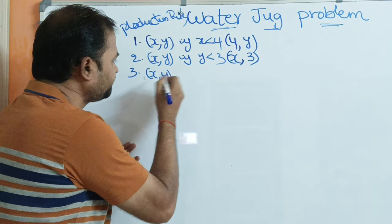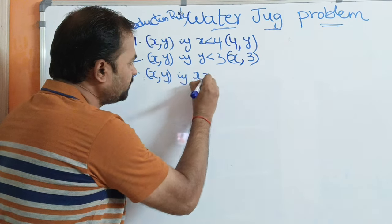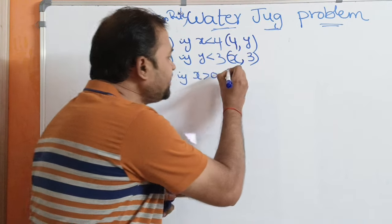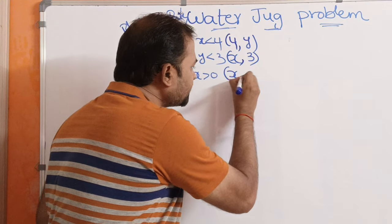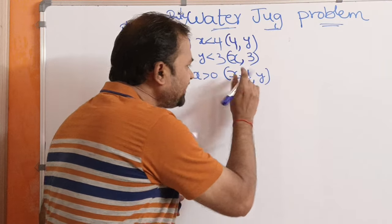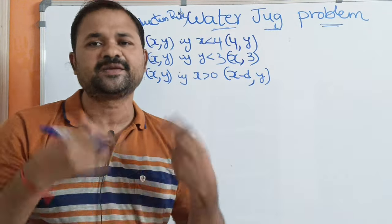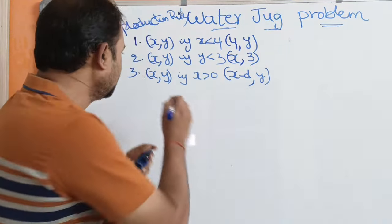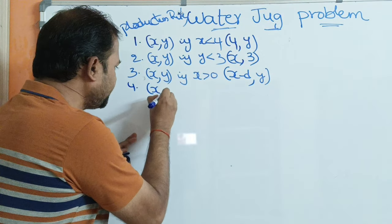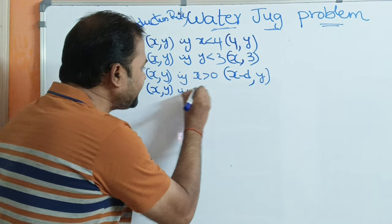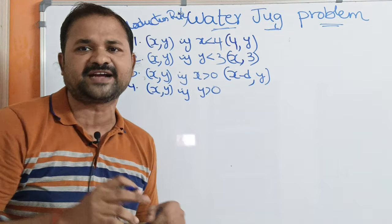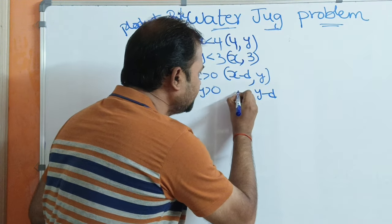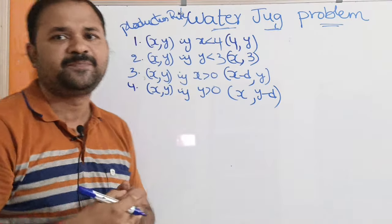The third rule: if the current state is (x, y) and x is greater than 0 — meaning the 4-liter jug contains some water — then we can pour some amount d from the 4-liter jug, giving (x minus d, y). The fourth rule: if y is greater than 0, meaning the 3-liter jug contains some water, then we can pour some amount d from the 3-liter jug, giving (x, y minus d).